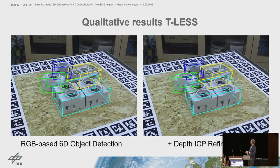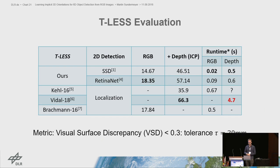In terms of numbers, in the RGB domain we beat competing methods on the TLS dataset. In the depth domain, we are competitive when we initialize the ICP with our method. We are much faster than competing algorithms — the state of the art takes almost 5 seconds per target. The biggest remaining challenge is strong occlusions.